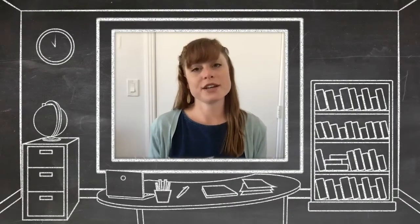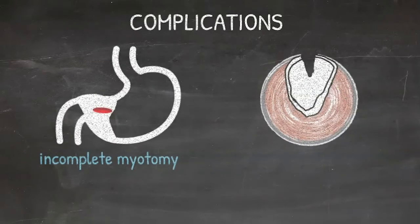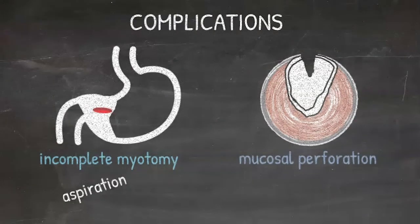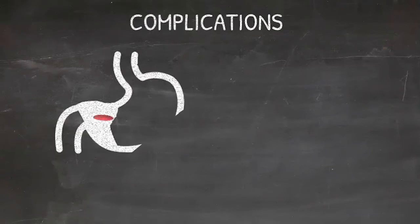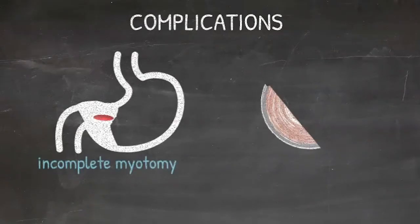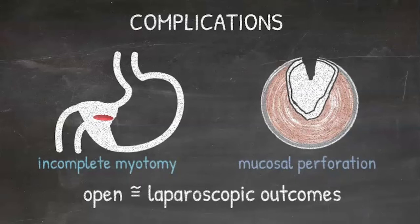What are potential complications from surgery? The complications usually are incomplete myotomy, mucosal perforation, aspiration, wound infection, and incisional hernias. Statistically, there is a slight increased risk of incomplete myotomy and perforation with a laparoscopic approach, but the overall low incidence of complications decreases the clinical significance of the differences between the two approaches.